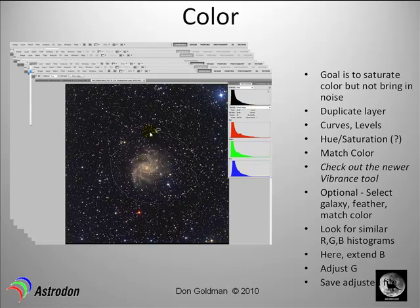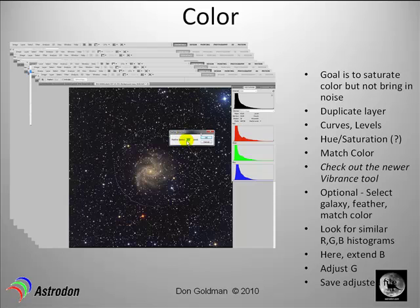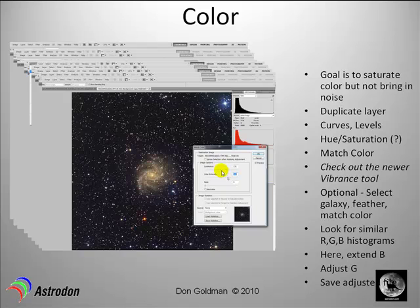We can even circle the galaxy, go into the feather selection, feather it with a large value like 150, and do the Match Color adjustment for color saturation again. We bring up the luminance a little less, to about 131, but bring up the color intensity strongly with a value of anywhere from 130 to 150. The result is very nice, strongly colored — a good starting basis to composite our LRGB image.